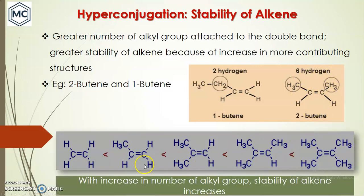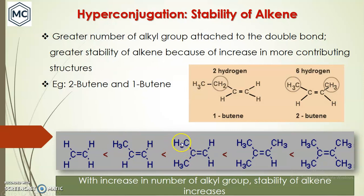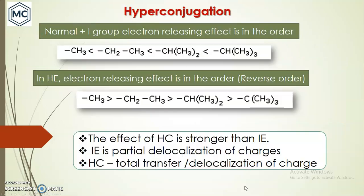The alkene stability order shows that as the number of alkyl groups attached to the double bond increases, the number of hyperconjugative structures increases. One alkyl substituent gives 3 alpha hydrogens, two gives 6, three gives 9, and four gives 12 alpha hydrogens. With an increase in the number of alkyl groups, stability of the alkene increases.